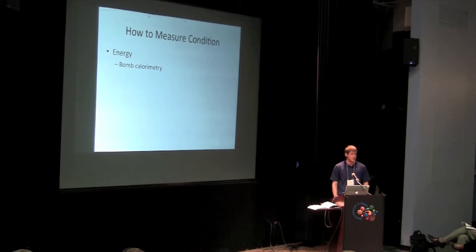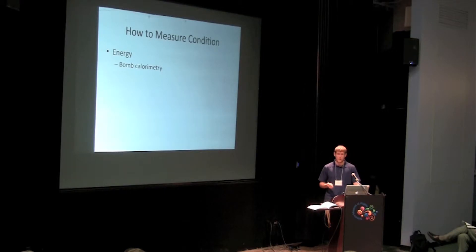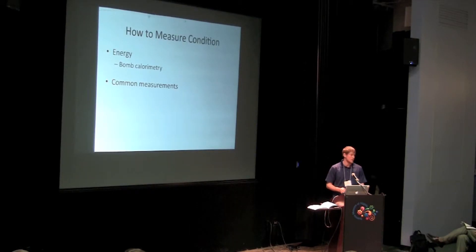For that first question, how do we measure condition? Ideally we would use energy because it's energy that actually determines survival. Normally we would measure energy through an approach called bomb calorimetry. Unfortunately, calorimetry is a slow and somewhat costly process, so we really need something that's a bit more rapid to look at a large number of fish. So I've investigated several common measurements that are typically used to measure fish health, and I compared them to estimates of energy.